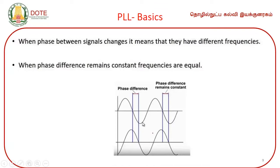When both are in the same frequency, that is the locked condition. When both are in different frequencies, in a PLL that difference is used to generate a proportional voltage. So what you have learned now is: what is phase, how to check the phase difference between two waves, and how to test the frequency difference between two waves. With this fundamental idea, let us move on to the PLL.